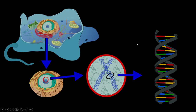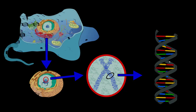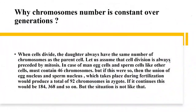You can observe: this is the cell, this is the nucleus, and in the nucleus you can see the genetic material. This genetic material has the double helical structure — DNA. These are the chromosomes, which contain DNA. Why is the chromosome number constant over generations? This is the question which scientists struggled with a great deal.